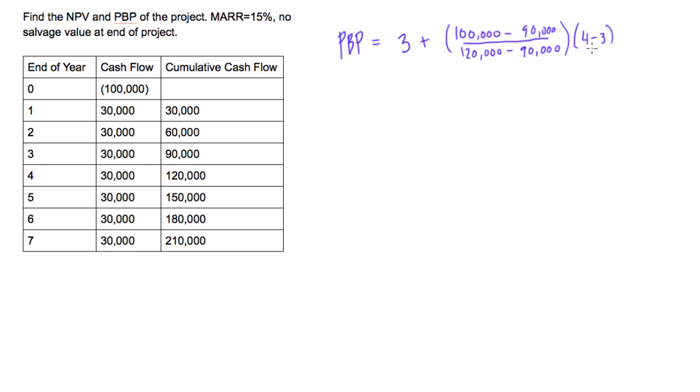Year four minus year three. This just reduces to one in this case. So we get payback period is equal to three plus, this term just reduces to 0.33 or a third. So our payback period for this project is equal to 3.33 years.